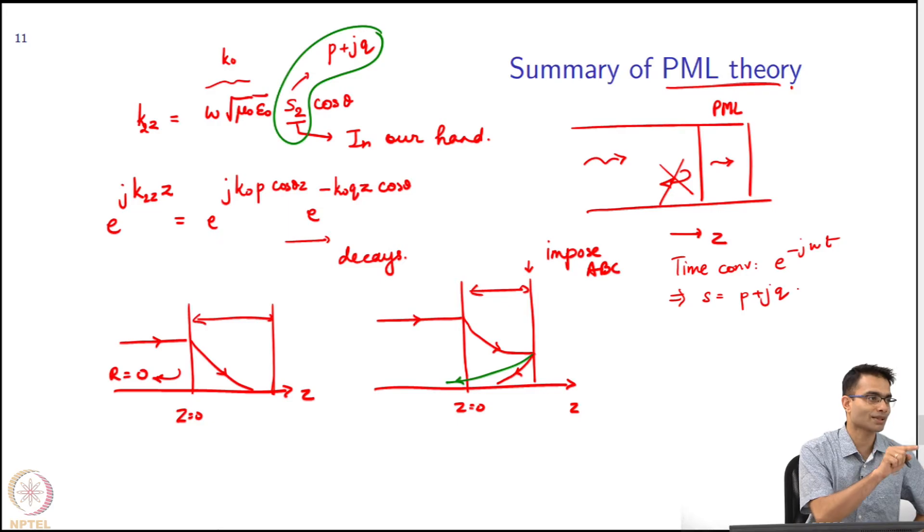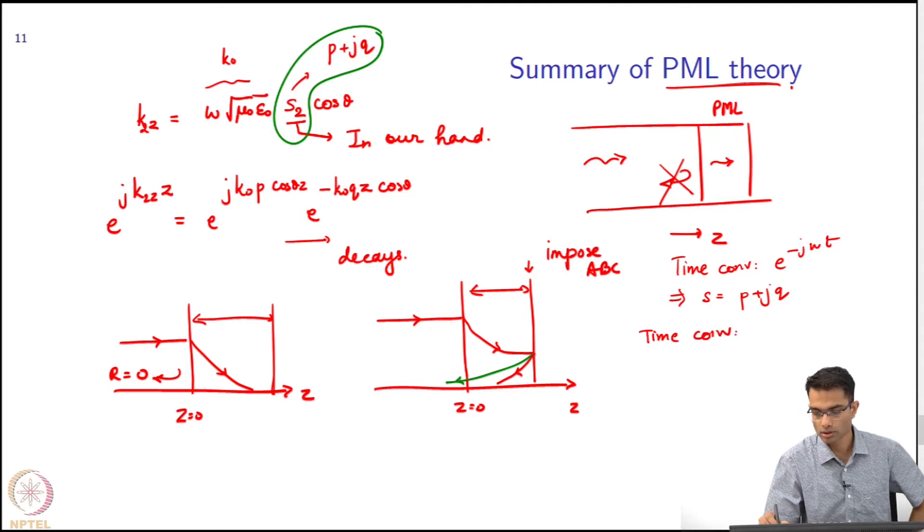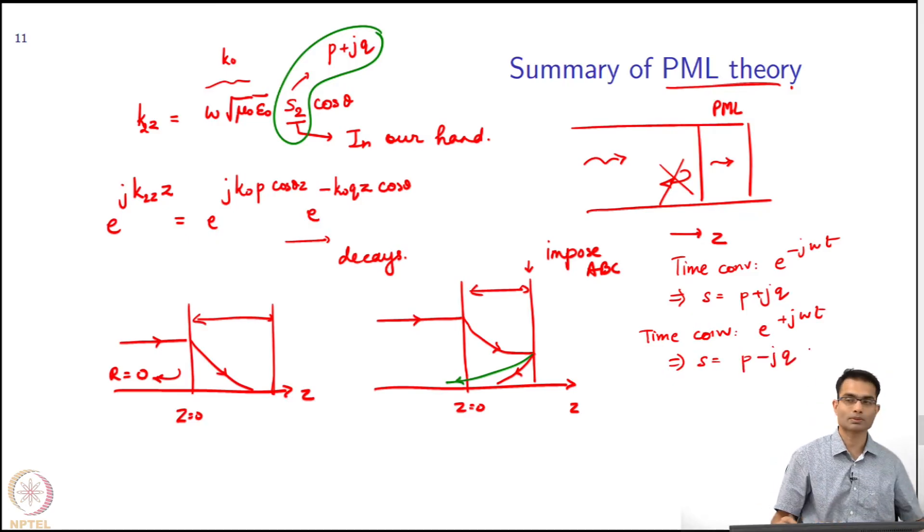Now, if I were to have the opposite time convention, e to the plus j omega t, then my s would be p minus j q. So these are some very simple implementation issues you should keep in mind, otherwise you will find that nothing works in your code.